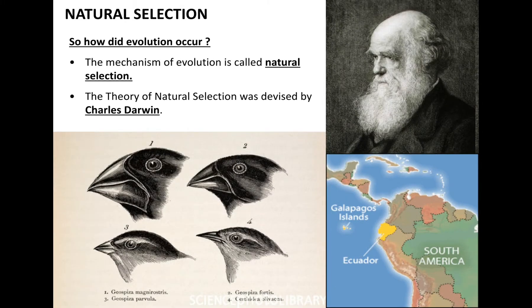Hello everyone. This is lesson two of natural selection and the question really is how does evolution occur in nature? The main mechanism of evolution is called natural selection and that's what we're looking at today. This theory of natural selection was devised by a man called Charles Darwin, and we're going to talk a little bit about how he came up with this theory.